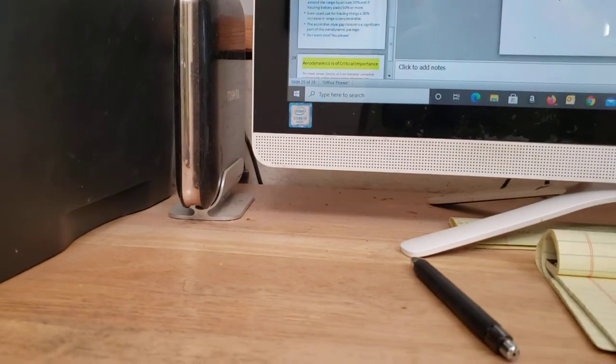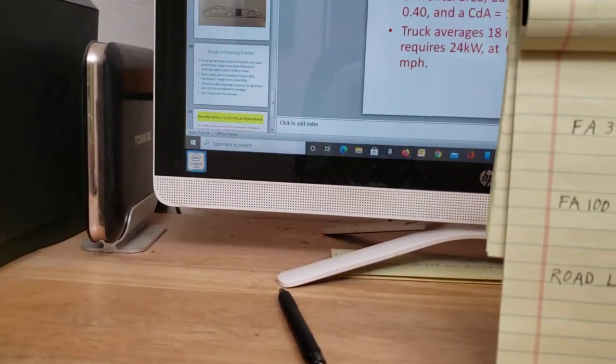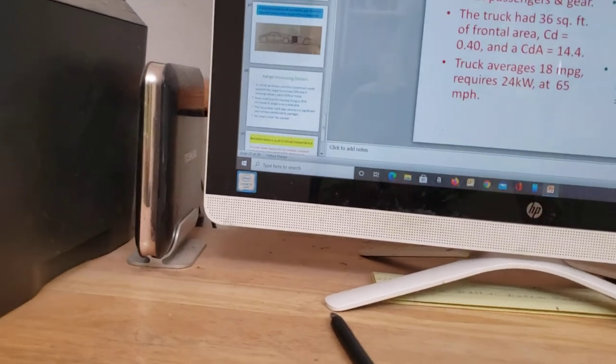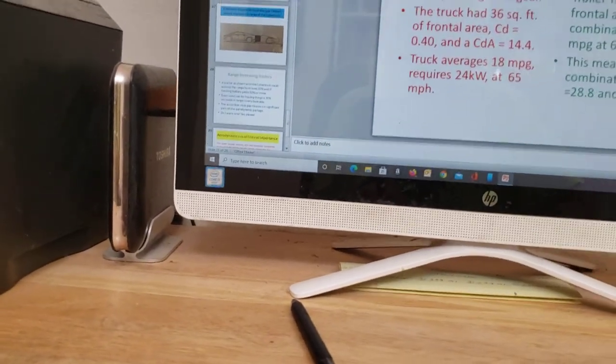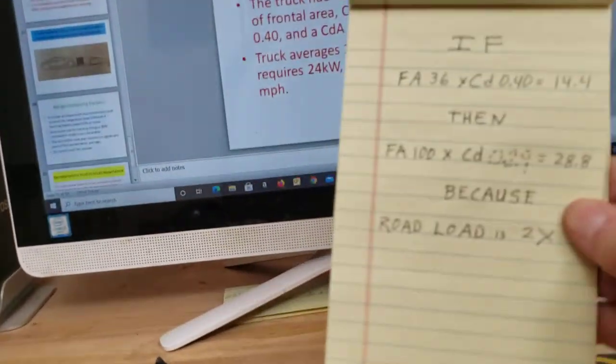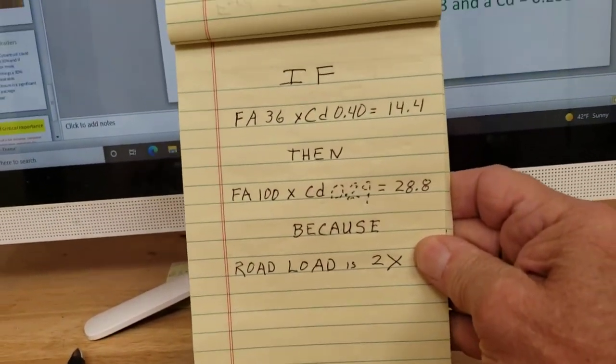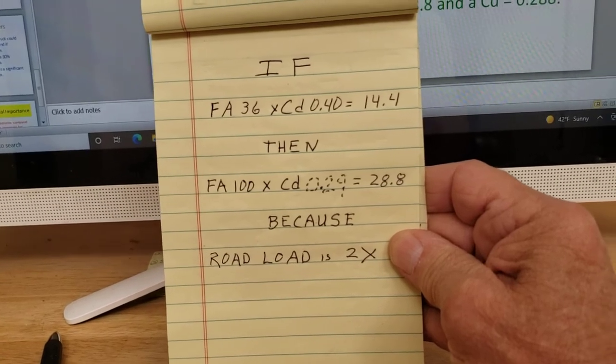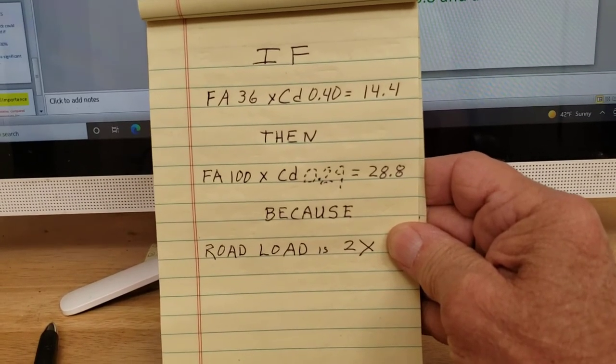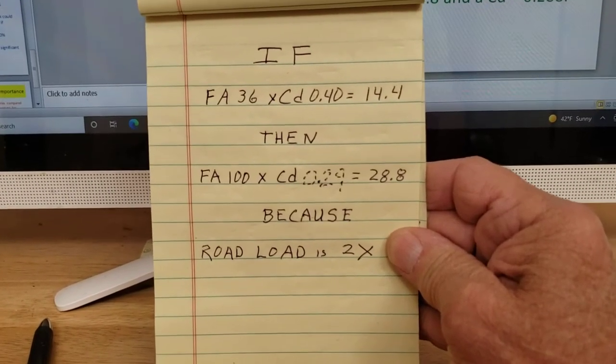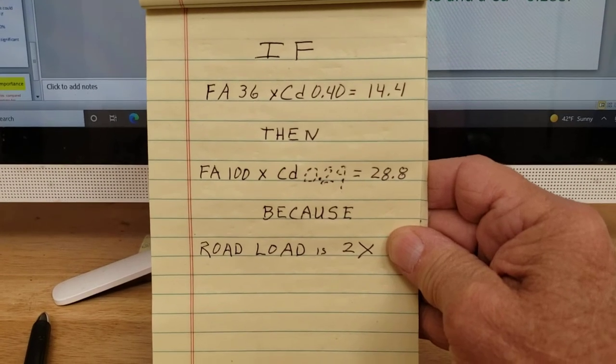The math actually drops out pretty simple. If it's requiring twice the fuel, if the frontal area is 36 (this is the truck) times the coefficient of drag 0.40...